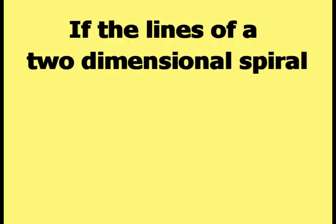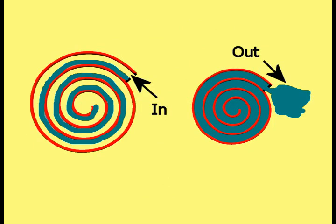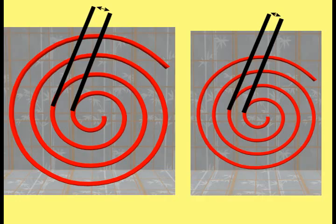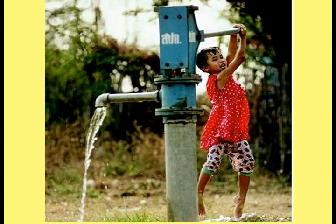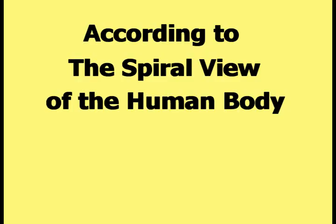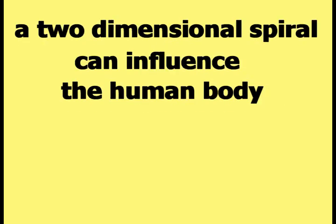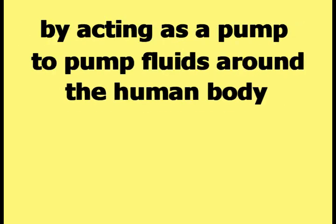If the lines of a two-dimensional spiral are continuously pressed in towards and pulled away from the center, the movement of material in and out of the gaps — caused by the changing gap size — is like the action of a fluid moving in and out of a pump. According to the spiral view of the human body, a two-dimensional spiral can influence the body by acting as a pump to move fluids around it.